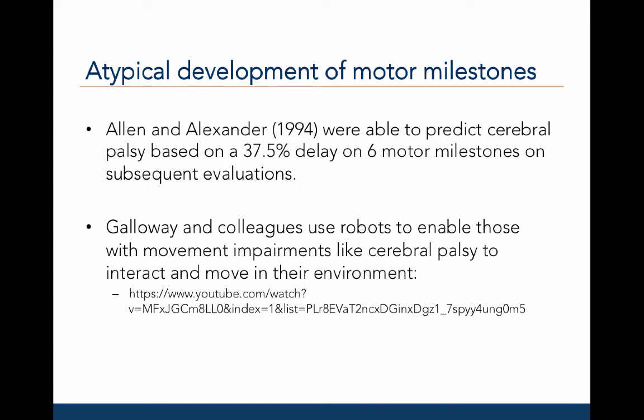We also see motor delay in infants with cerebral palsy. Allen and Alexander in 1994 examined the performance of six motor skills during infancy in 173 preemies at high risk for cerebral palsy. The specific skills were roll prone to supine, roll supine to prone, sit with support, sit without support, crawl, and cruise. They found they could predict cerebral palsy based on a 37.5% delay from one evaluation to the next of each of these six skills.